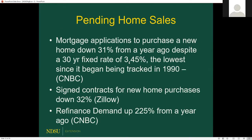Mortgage applications for new purchases are down 31% from this time a year ago, despite the 30-year fixed rate being at 3.5%, the lowest since tracking began. People are not buying new homes. However, refinance demand is up 225% as people take advantage of low rates. Signed new contracts tracked by Zillow are down 32% from a year ago, and the most recent weeks aren't even included in this data yet.